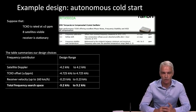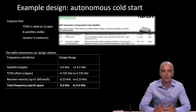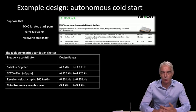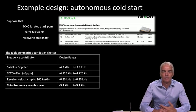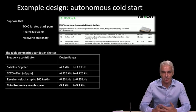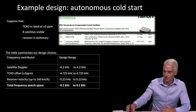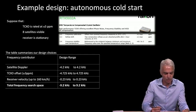Just to get these terms straight: cold start generally means the receiver has no prior information. It's not a strictly defined term in GPS, it just has a standard meaning — no orbit information, does not know the time, and does not know where the satellite is as it starts up. And autonomous means the receiver has no external assistance; it's the opposite of assisted GPS. So let's look at an example of an autonomous cold start.